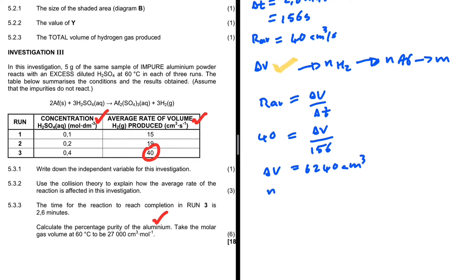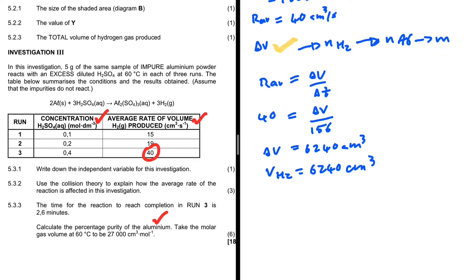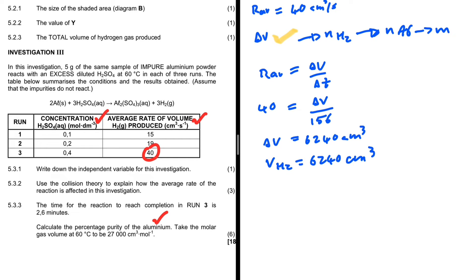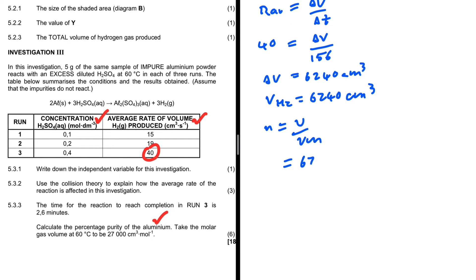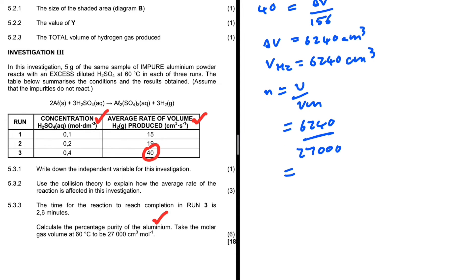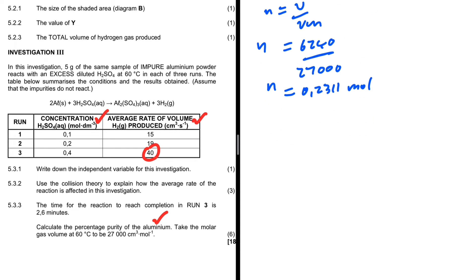Cross-multiplying: 40 × 156 = 6240 cm³. Since we started with zero hydrogen gas, the volume of H₂ produced is 6240 cm³. Now, moles of H₂ = volume / molar gas volume = 6240 / 27,000 = 0.2311 moles.